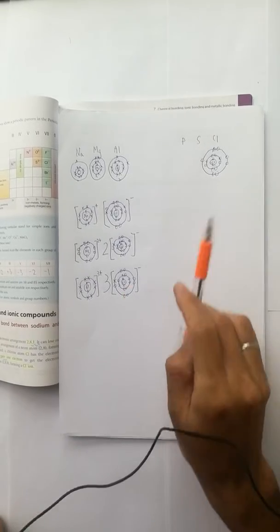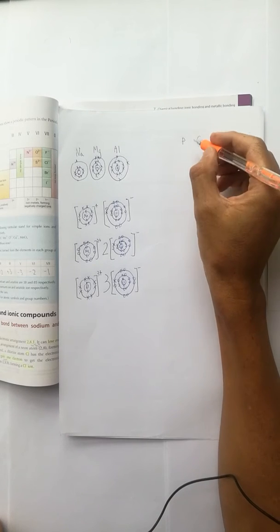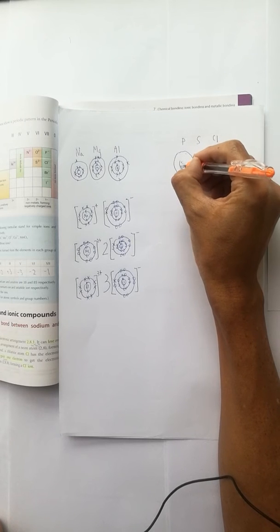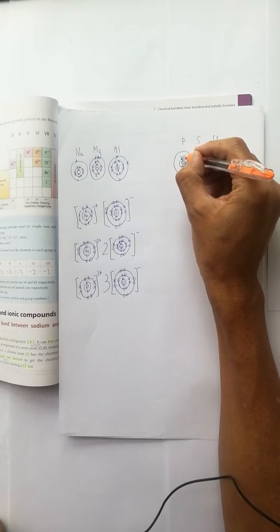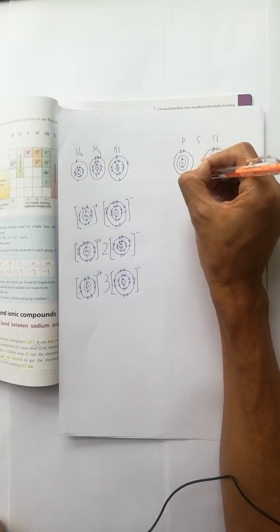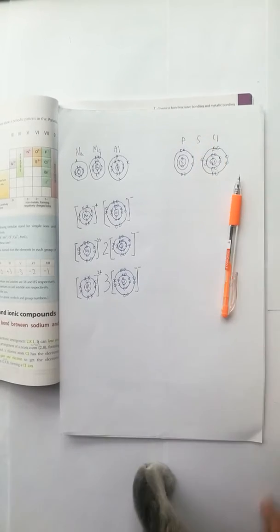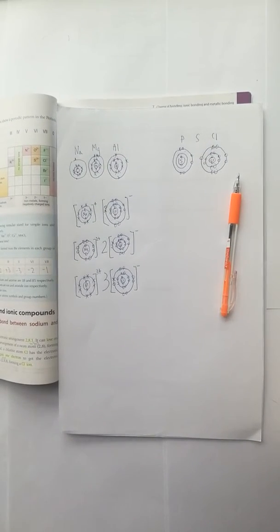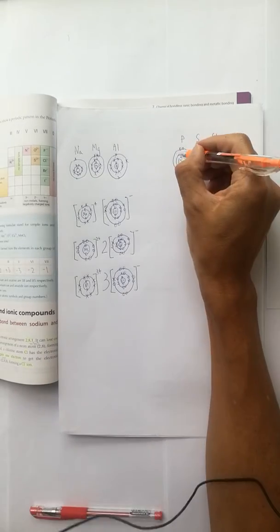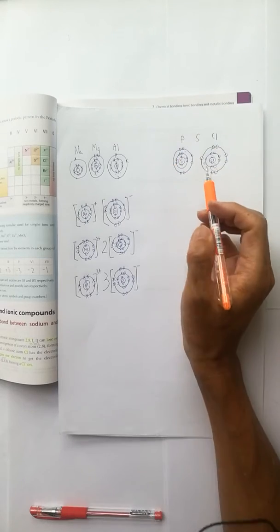Okay, now we change the non-metal from chlorine to sulfur. The sulfur is in group six and there are six outer shell electrons, six valence electrons.